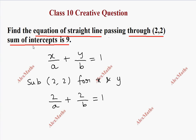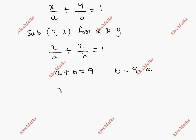Now, the sum of the intercepts is given. The intercepts are a and b, so a plus b equals 9. From this, b equals 9 minus a. Substituting into the equation: 2 by a plus 2 by (9 minus a) equal to 1.